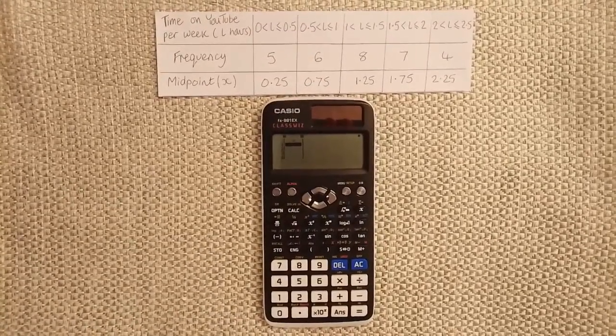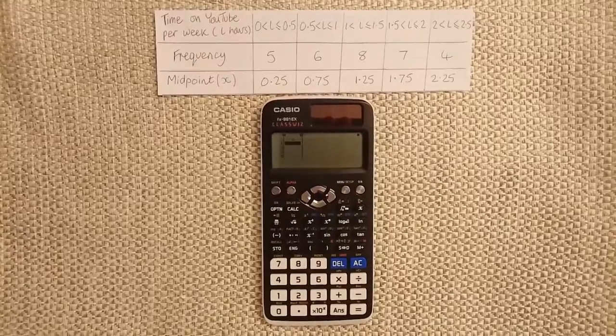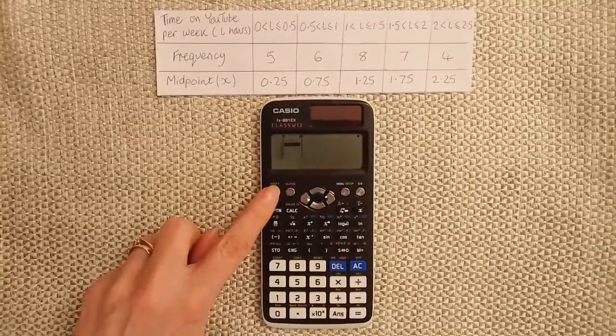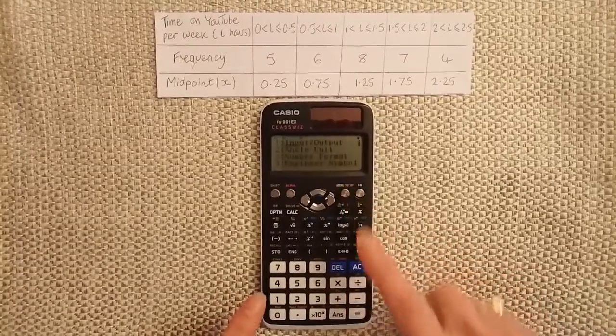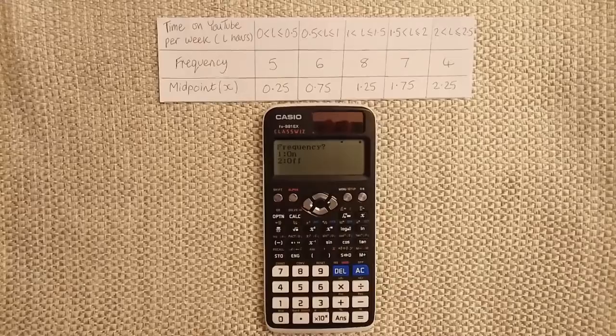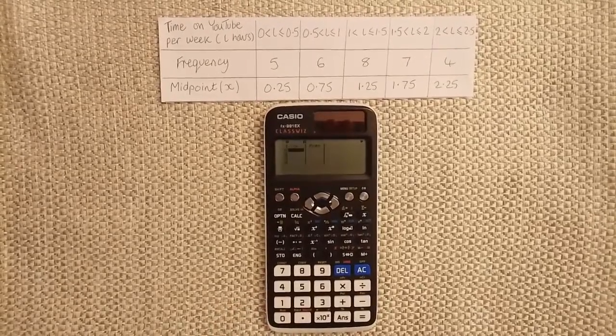If there isn't a frequency column already, we need to add a frequency column. To do this, press shift menu down 3 and then 1 to turn on frequency.